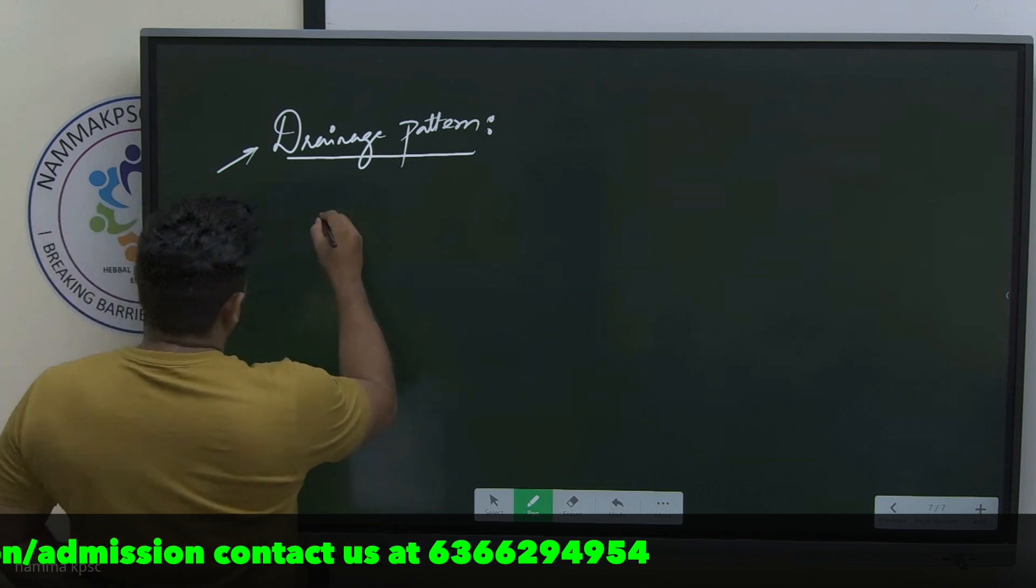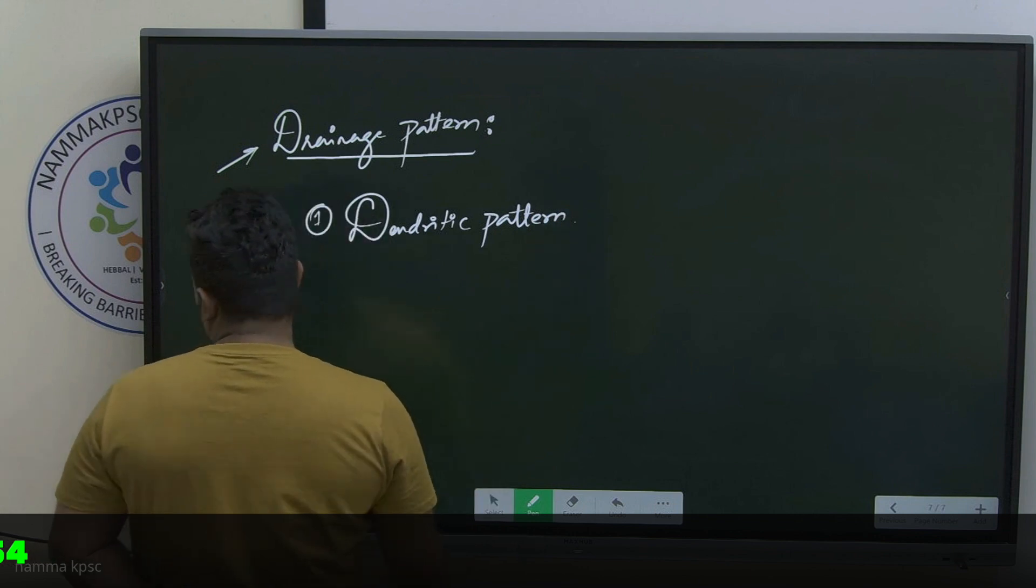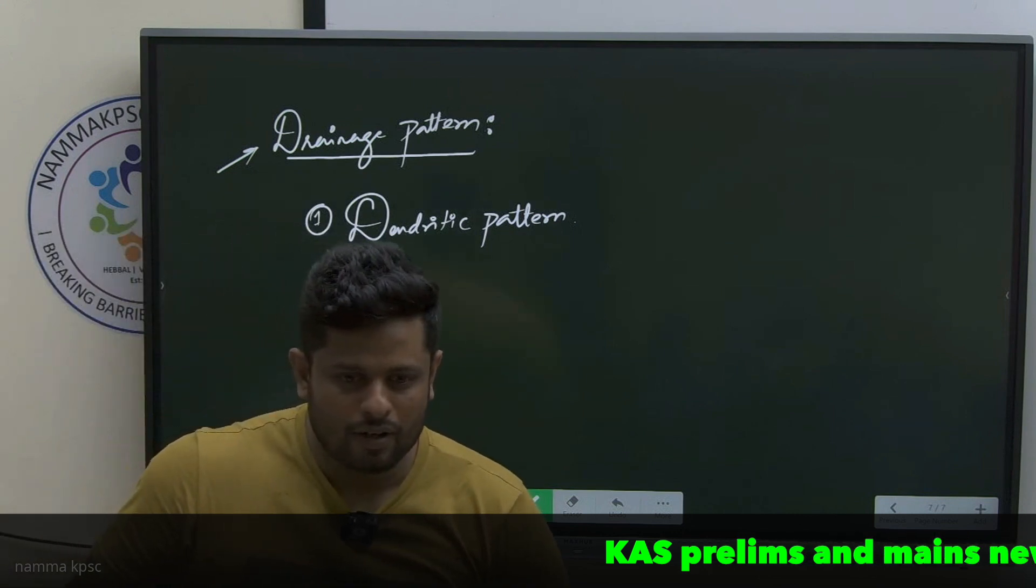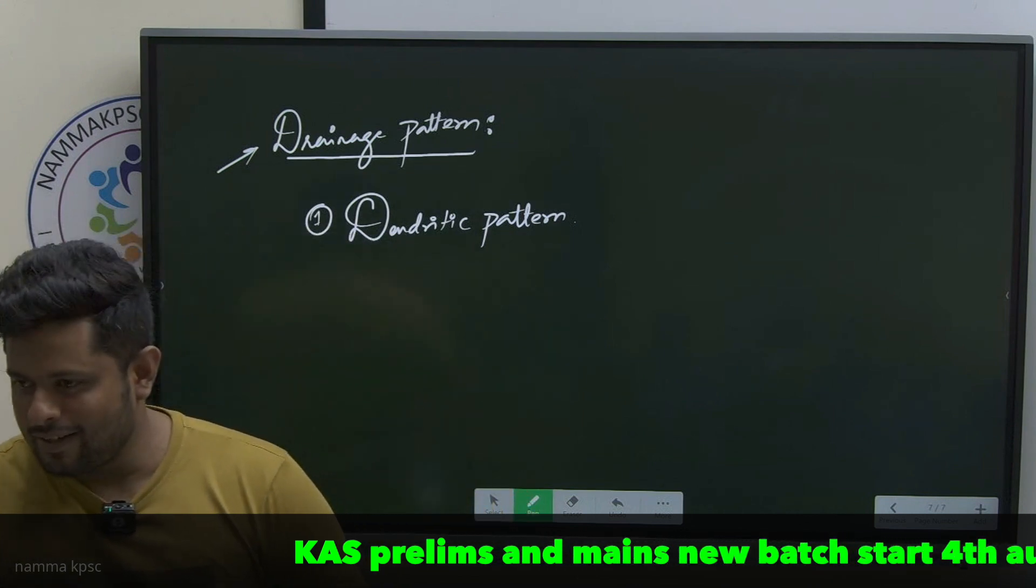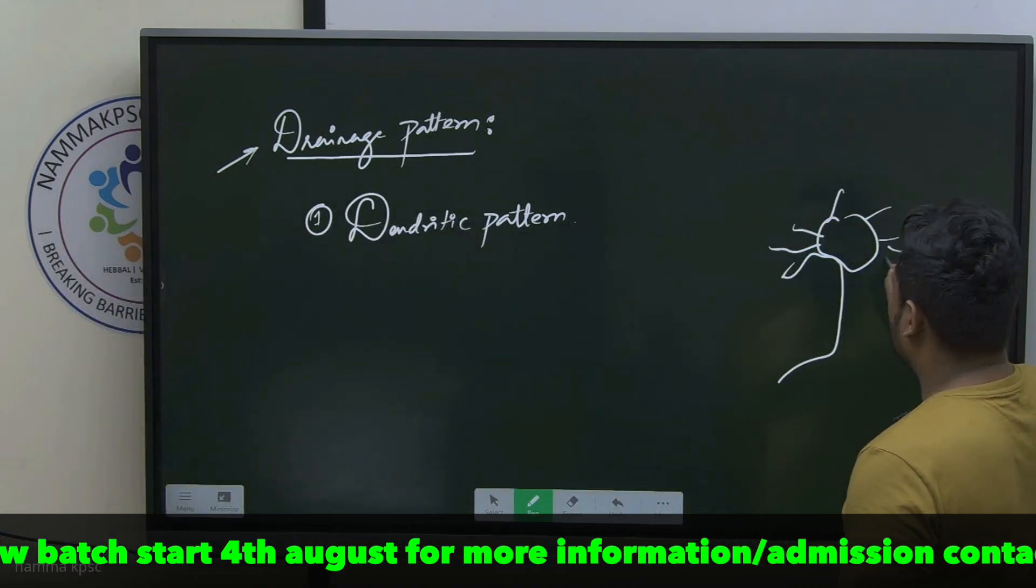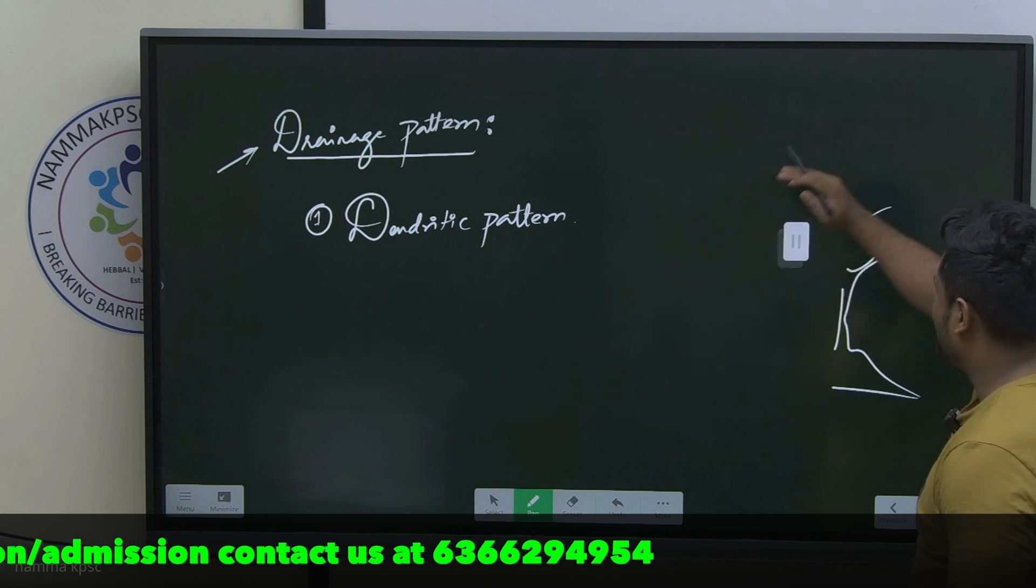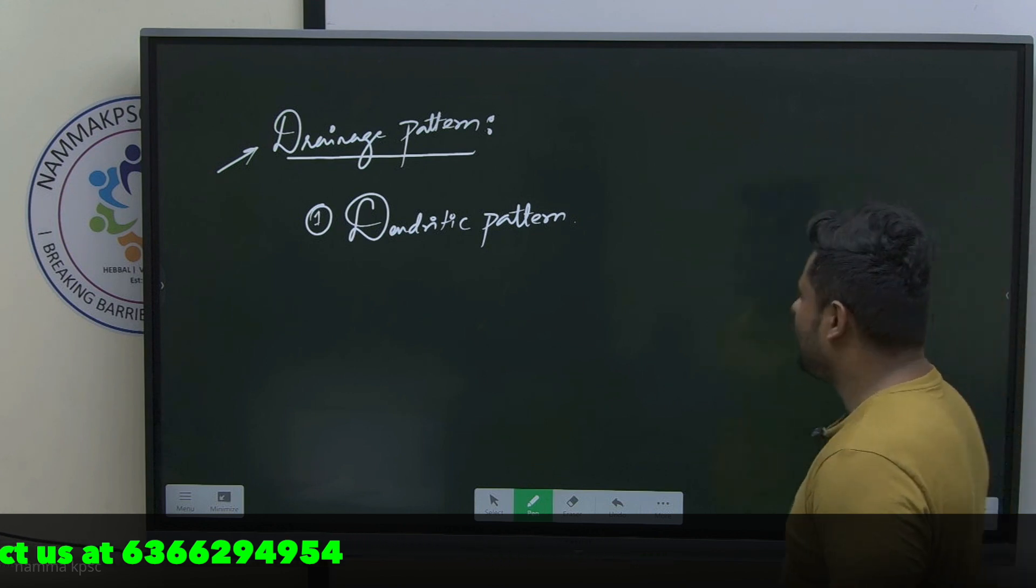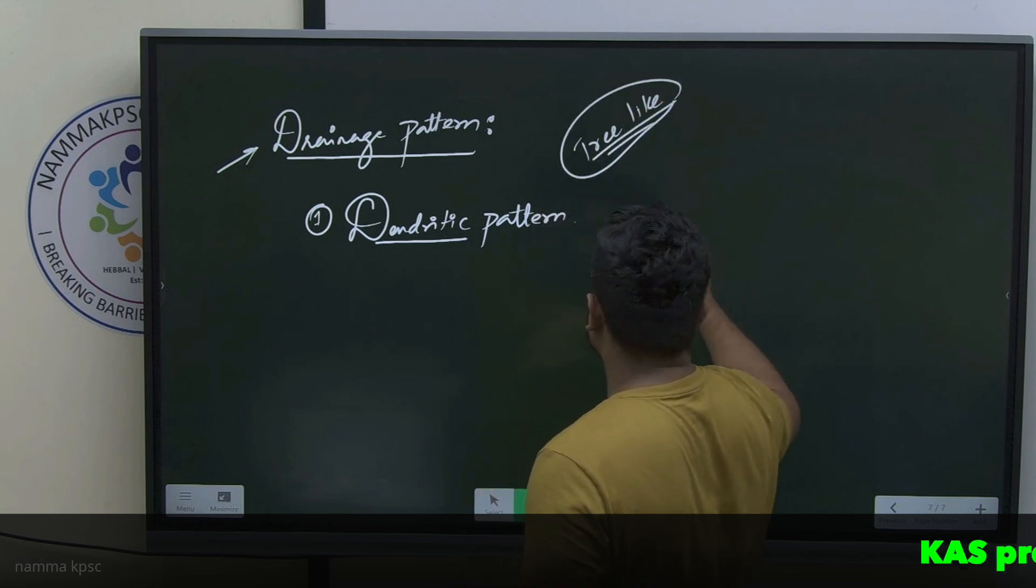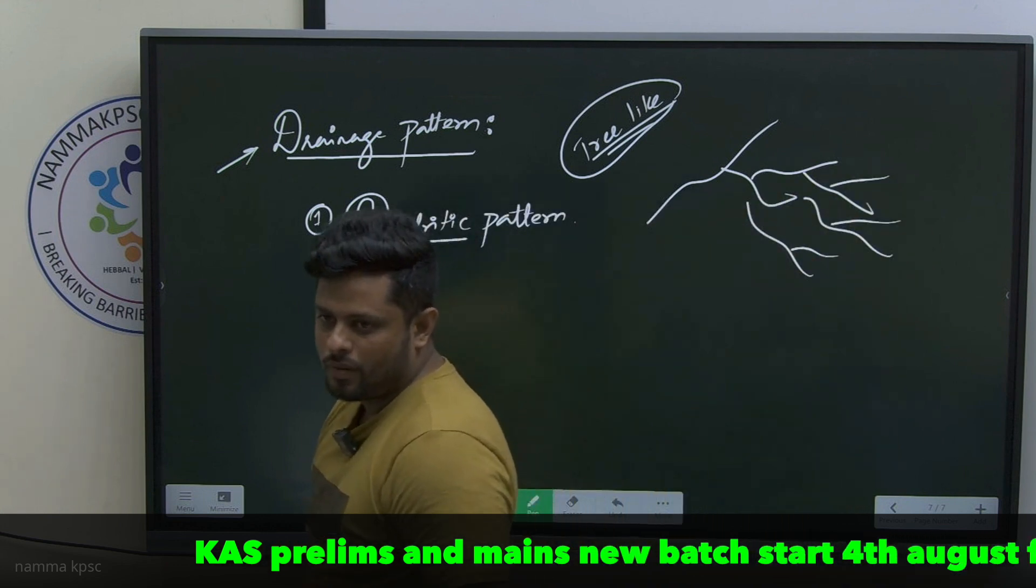There are plentiful of drainage patterns. For example, dendritic pattern - dendritic is a term where it's tree-like, like a nerve cell. Dendritic usually means tree-like. If the river is having branching like the branches of the tree, we call such a pattern as dendritic pattern.